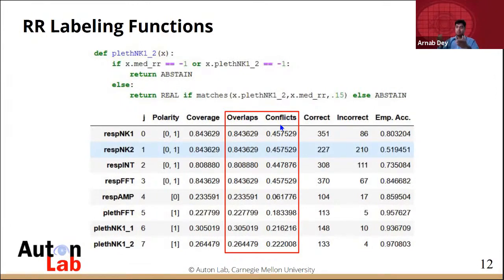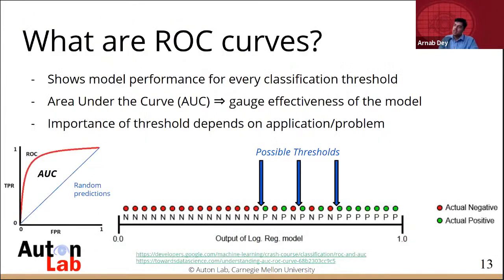I used a Philips monitor and looked at data from ICU and SDU patients. The labeling functions thrive on overlaps and conflicts between each other. The more overlap and conflict, the better for prediction. ROC curves show model performance for every classification threshold.